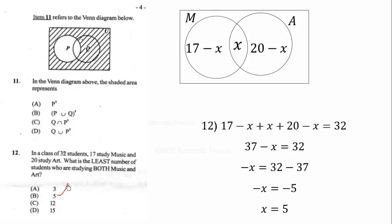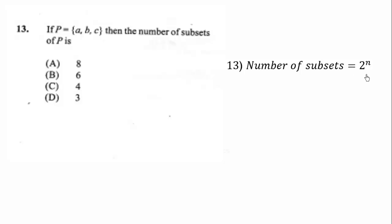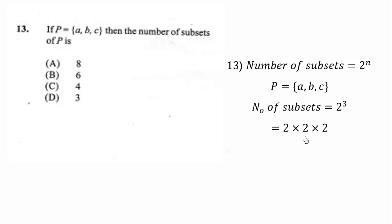The least number of students studying both music and art is 5. Next: if P is a set with elements a, b, c, then the number of subsets of P is — we know the number of subsets of a set is given by 2 to the power n, where n is the number of elements. The given set P has 3 elements, so n equals 3 and the number of subsets equals 2³, which is 2 times 2 times 2, giving us 8.